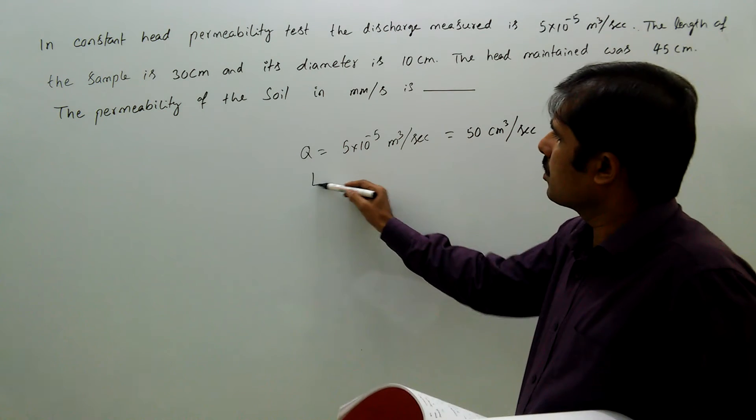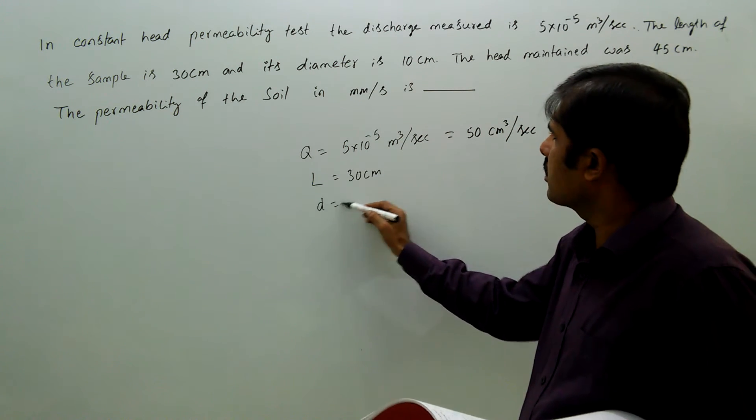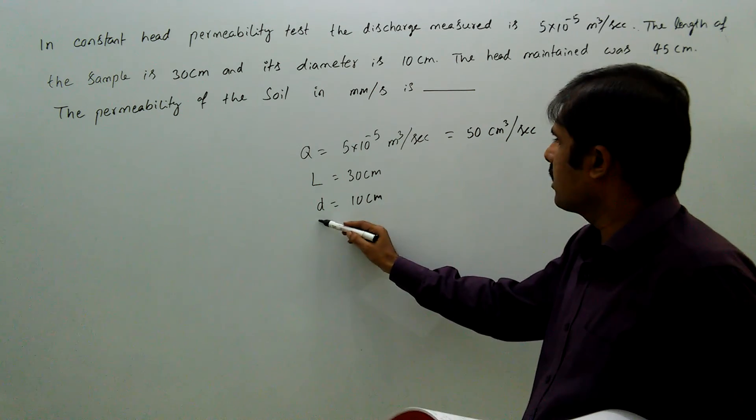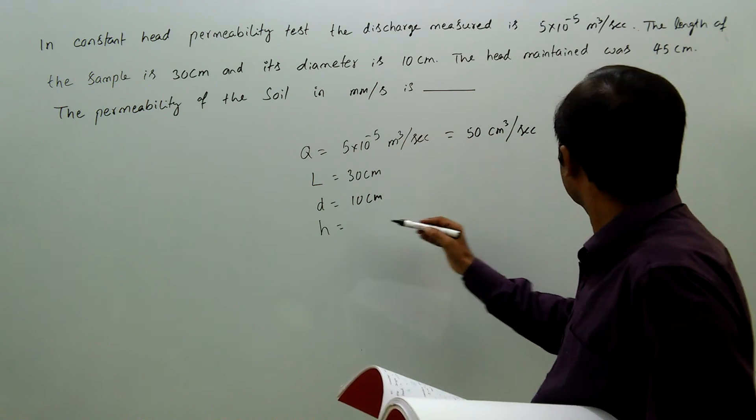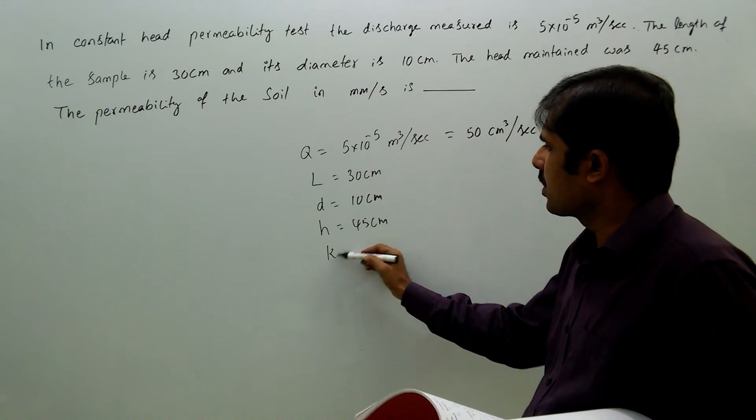Length L = 30 cm, diameter d = 10 cm, and h = 45 cm. We need to find permeability k.